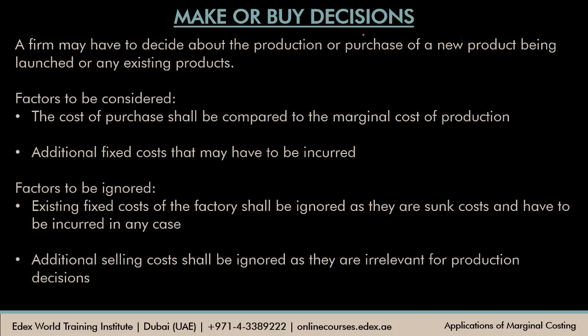Using marginal costing concepts, you can also decide whether to make a product in-house or to buy it from an external supplier. This situation can arise for existing products — where you're already producing them but now have the option to purchase from an external supplier — or for new products you may launch in future. For both situations, this decision framework is relevant. The cost of purchase should be compared to the marginal cost of production, which is nothing but the variable cost of production.